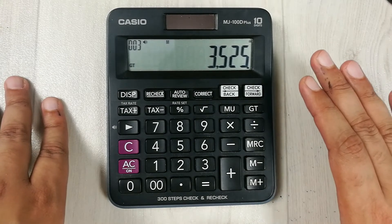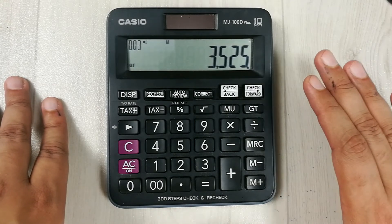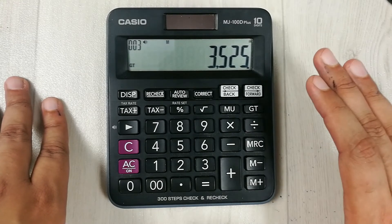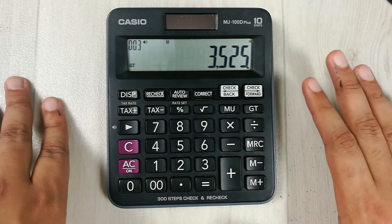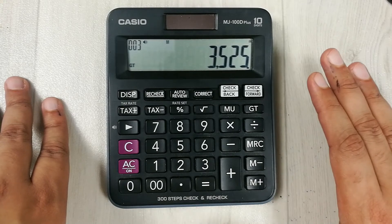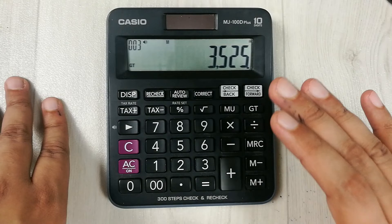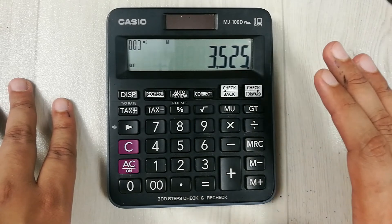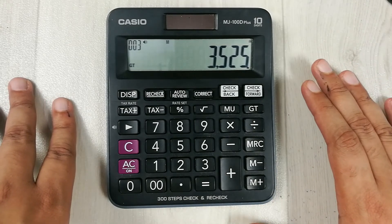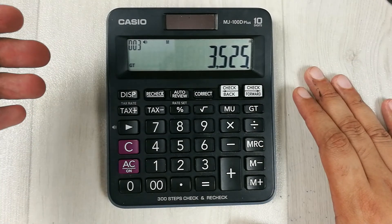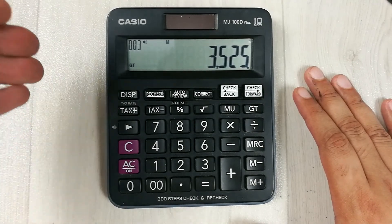So guys, 3,525 rupees is the final price, is the discounted price after 25% discount from 4,700 rupees. This is the final price that you have to pay which is 3,525 rupees.